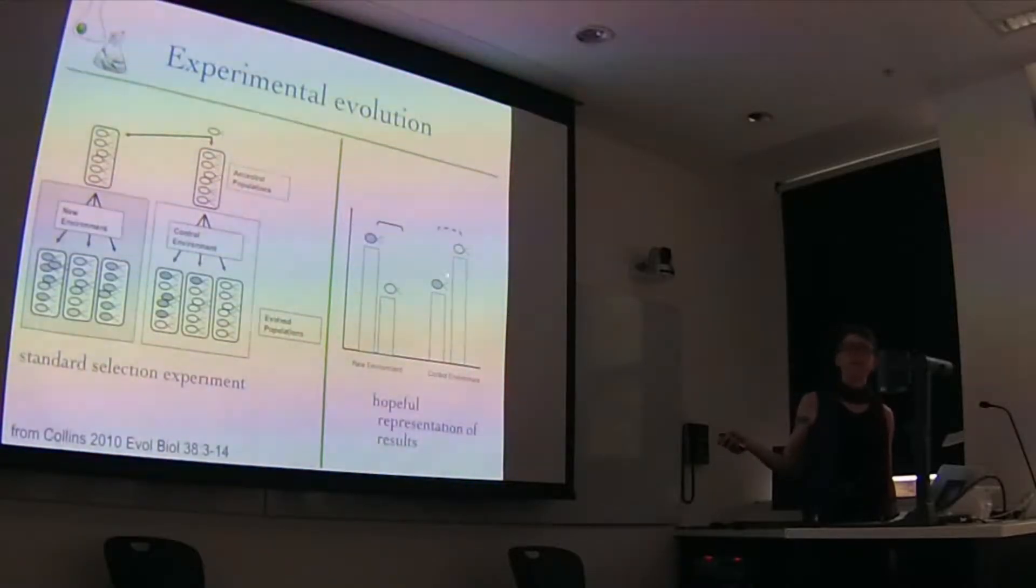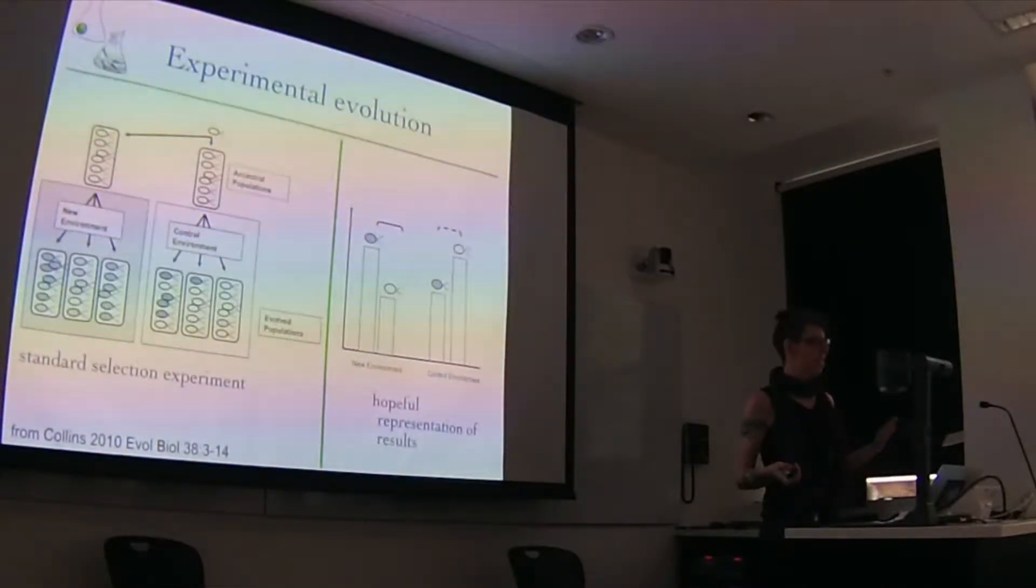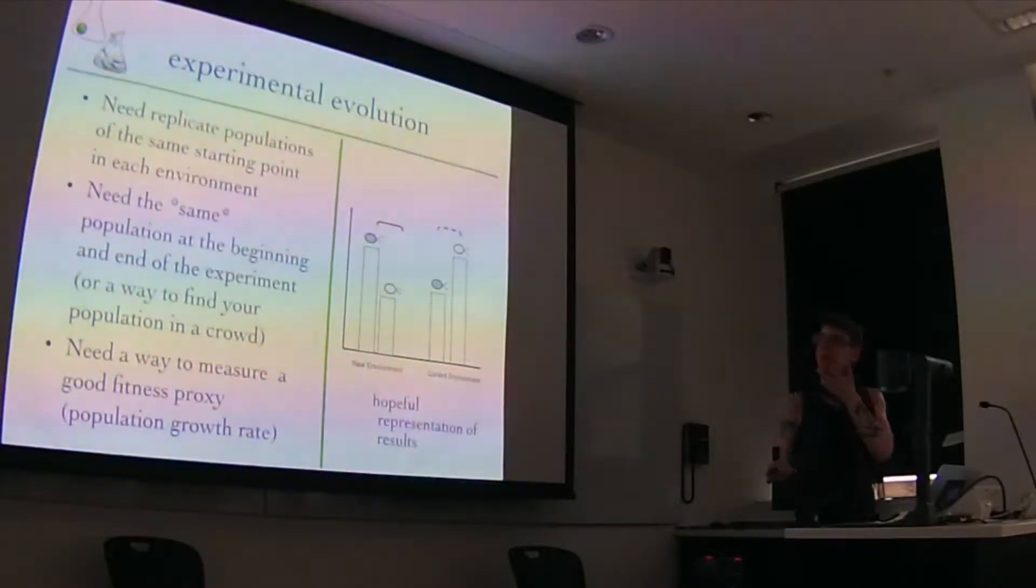This is often called a direct response to selection. This is often called a correlated or indirect response to selection. It just means that evolution has happened, but natural selection wasn't acting directly on these trait values. So the traits can change, but you're not going to argue that the population is maladapted to this environment because it never saw that environment. Natural selection didn't maladapt it.